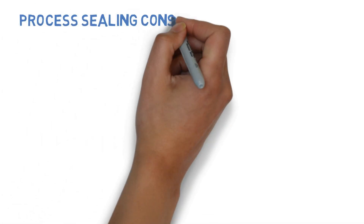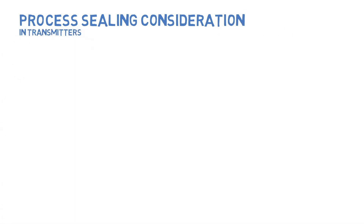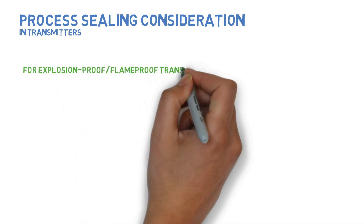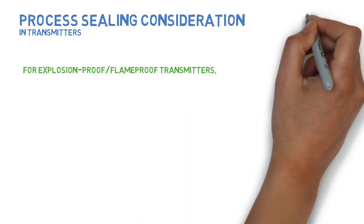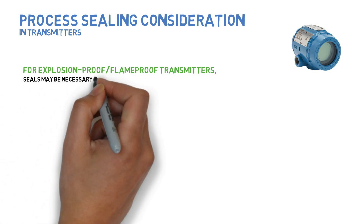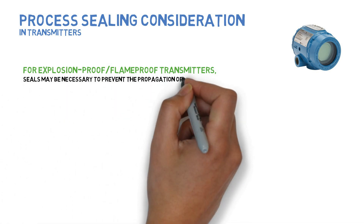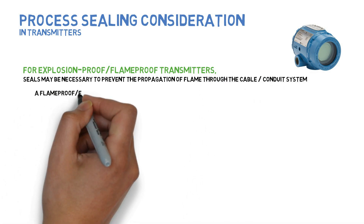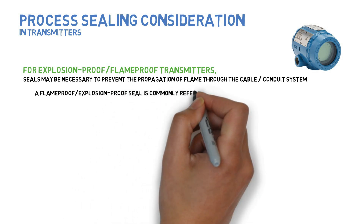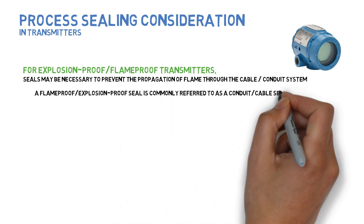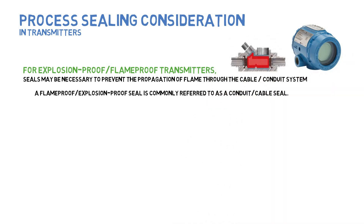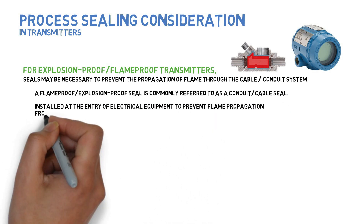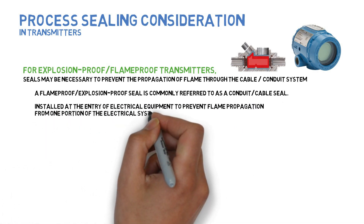For explosion proof or flame proof transmitters, seals may be necessary to prevent the propagation of flame through the cable or conduit system. A flame proof or explosion proof seal is commonly referred to as a conduit or cable seal, installed at the entry of electrical equipment to prevent flame propagation from one portion of the electrical system to another.